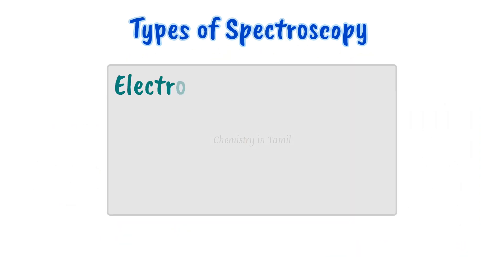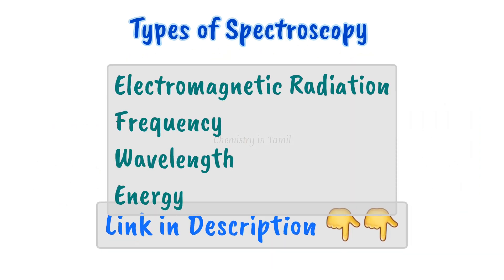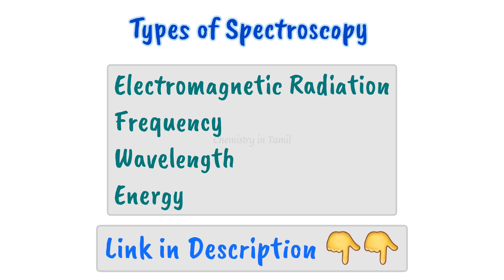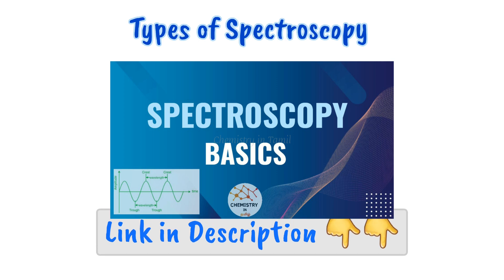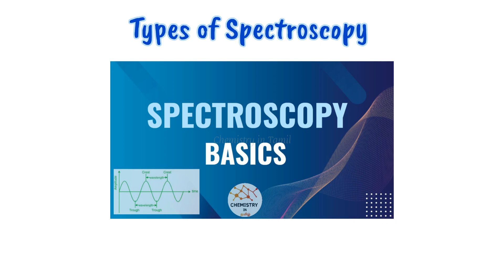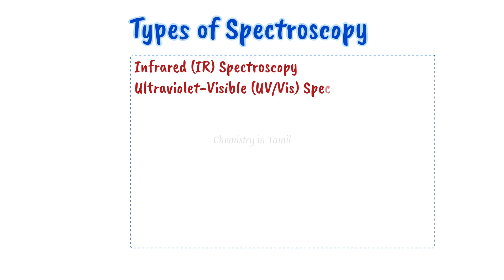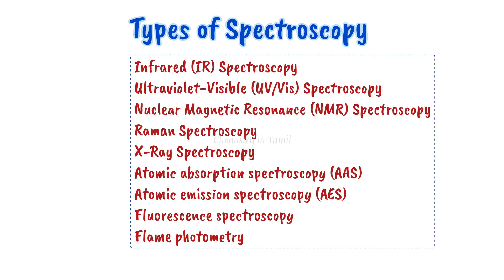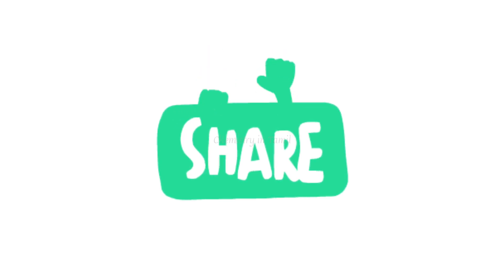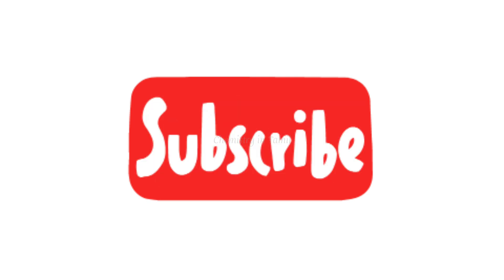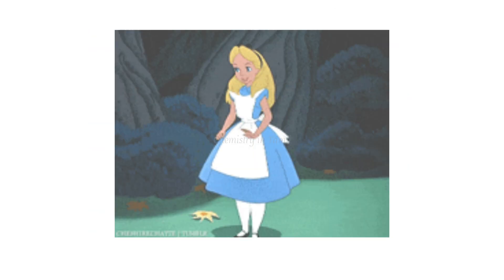So that's the video. In this spectroscopy video, we covered the basic things: electromagnetic radiation, wavelength, and energy — these are the key concepts. In further videos, we will see individual spectroscopy techniques in detail. If you found this useful, please like this video and share it with your friends. If you have any doubts, write in the comment section. Subscribe to the Chemistry in Tamil channel. Thank you for watching.